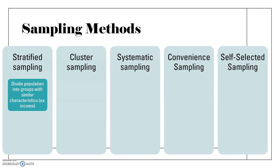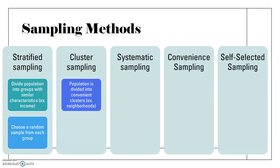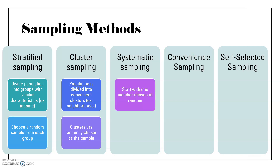In stratified sampling, you might group people by income level, then choose a random sample from each group — for example, randomly selecting people from a high-income group and also from a middle or lower-income group. For cluster sampling, you divide your population into convenient clusters like a classroom or a neighborhood, and then randomly choose some of those clusters. For systematic sampling, you start with one member chosen at random and then use a rule — like choosing every third social security number — to select other members of the sample.